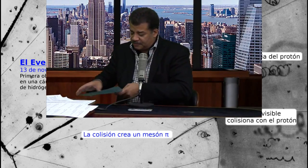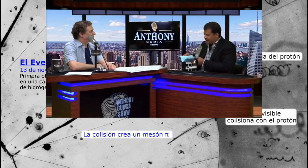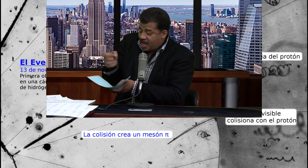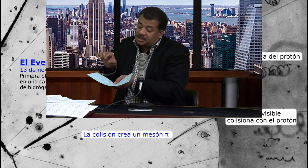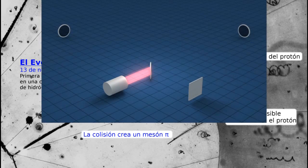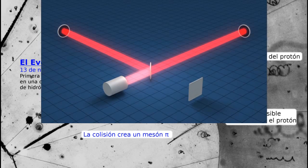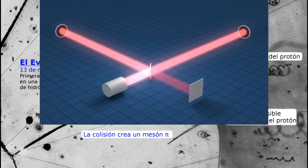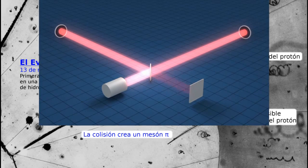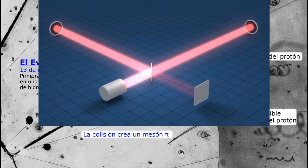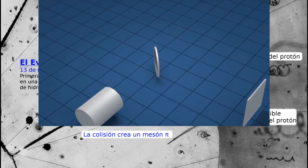Gravity is the distortion in the fabric of space and time. And if I have a massive object, I'm distorting it deeply, and some other object comes in the vicinity. LIGO — the most sensitive measuring device ever made — uses a device known as an interferometer to measure the tiny displacements in space.